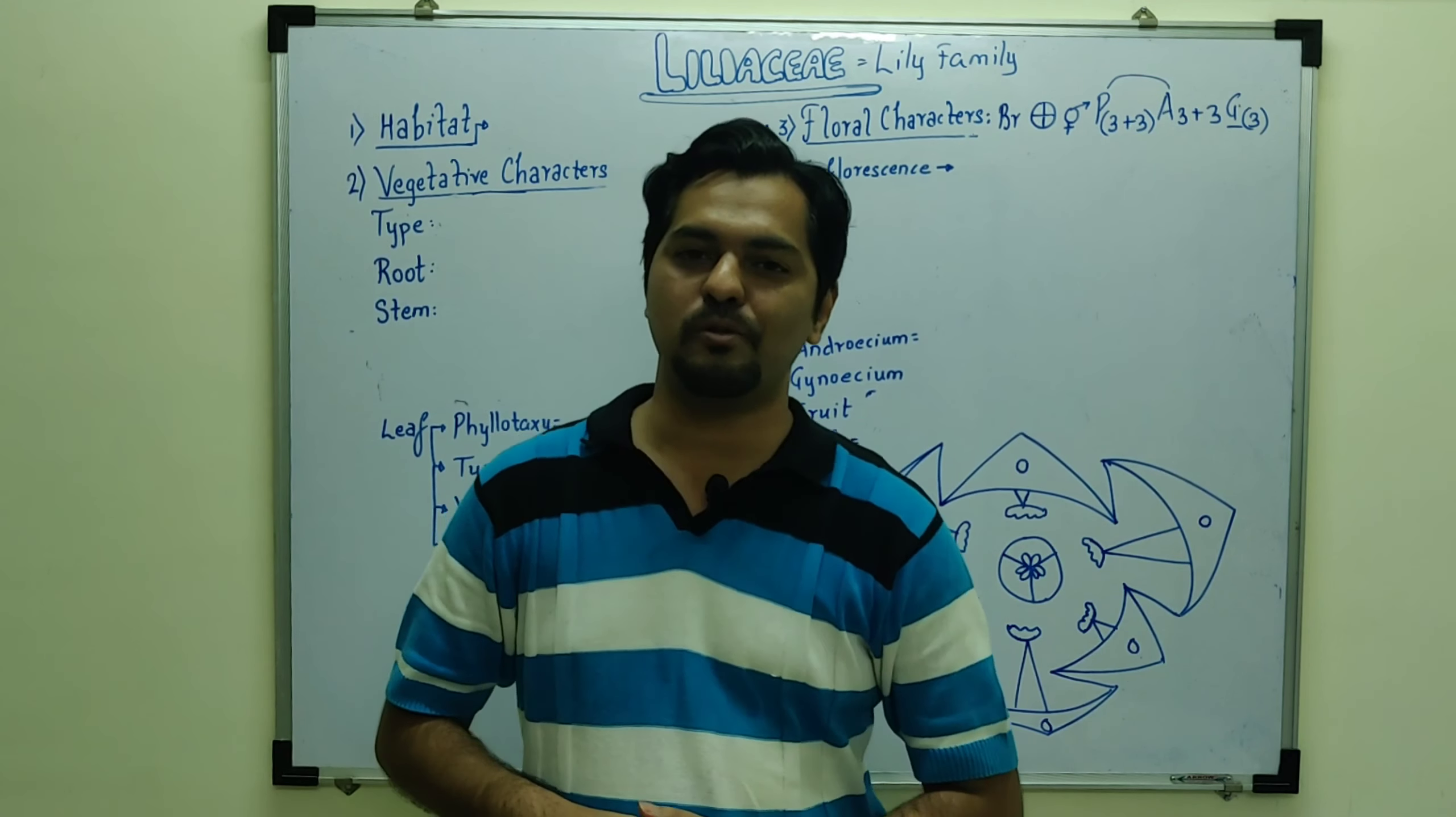Meaning this is a monocot, whereas Fabaceae, Solanaceae and Brassicaceae are dicot members. The habitat, these are widely distributed like Fabaceae, Solanaceae. We have mentioned that it was found in tropics, subtropics and some temperate regions.